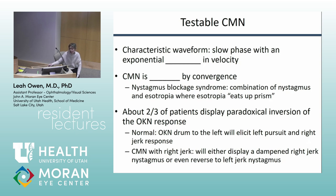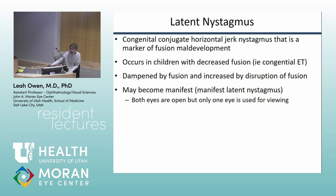The slow phase velocity in infantile nystagmus syndrome is a commonly tested topic. Convergence dampens it. Fusion maldevelopment syndrome — still often called latent nystagmus clinically — is named as such because the source is thought to be poor development of binocularity. Essentially, the child has no nystagmus on exam, but when you occlude one eye, nystagmus appears. It's usually a horizontal jerk nystagmus that is dampened by fusion and increased by disruption of fusion.